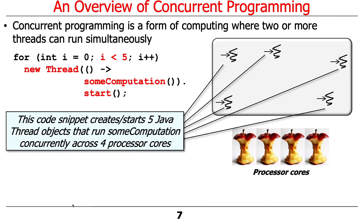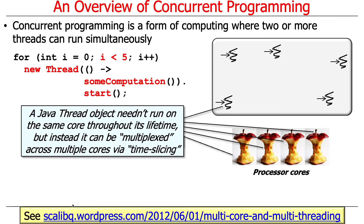Here's a simple example where we loop and spawn five threads, and each of those threads performs some computation. You can see we create these five threads, they run in that process, and do computation across four processor cores. This is a whimsical notation of a processor core — like an Apple core. A Java thread object doesn't actually have to run on the same core throughout its lifetime; instead, it can be multiplexed across multiple cores by time slicing.